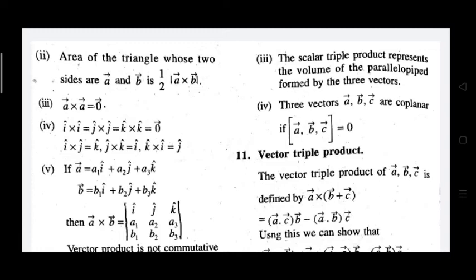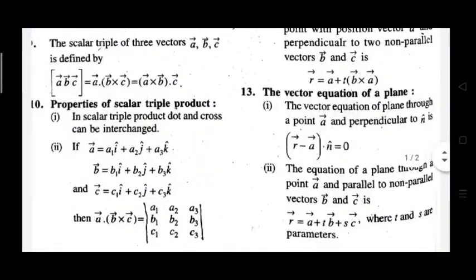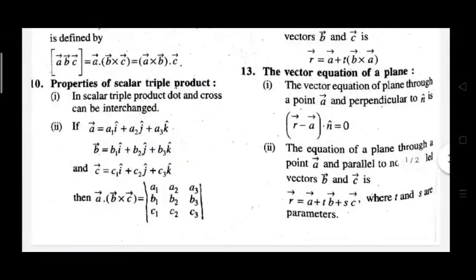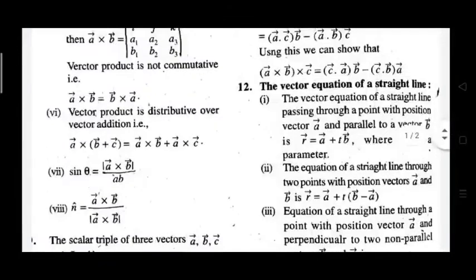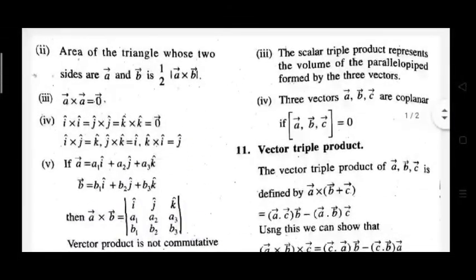If the scalar triple product value is zero, then vectors A, B, and C are co-planar. They are called co-planar vectors.